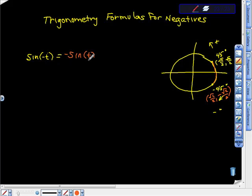If you know what sine of 45 is, then sine of negative 45 would be the opposite of that. Let's do the next one. Cosine of negative t is equal to what? Well, look at this. If we take cosine of 45 degrees it's right here, and cosine of negative 45 degrees is directly under it, so it hasn't moved at all. We haven't moved in the x direction whatsoever, so it's the same as cosine of t.